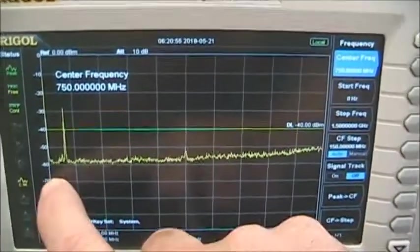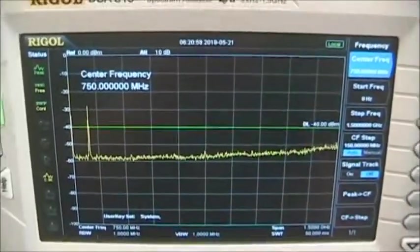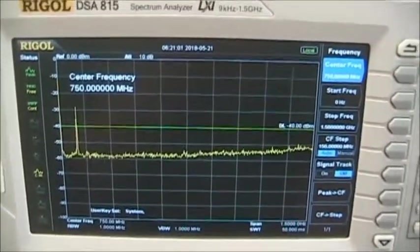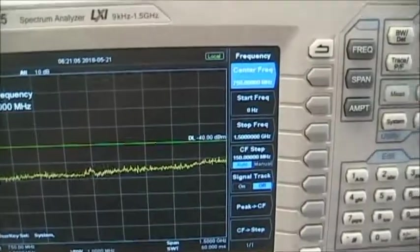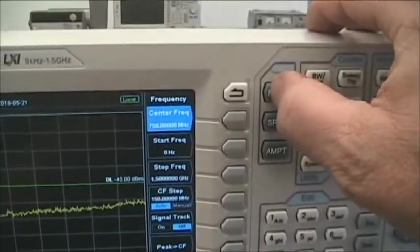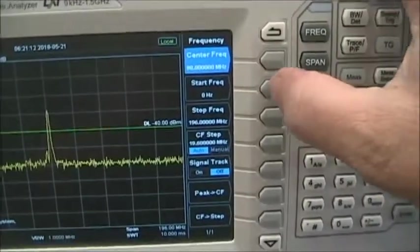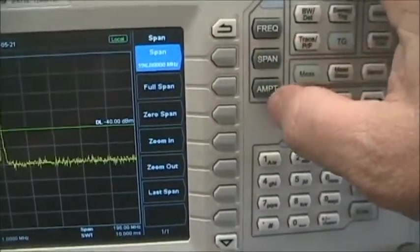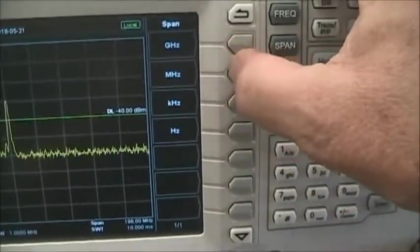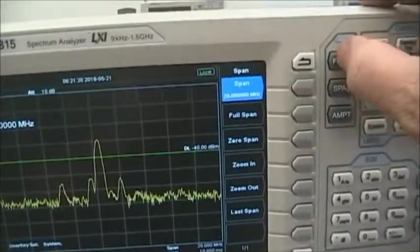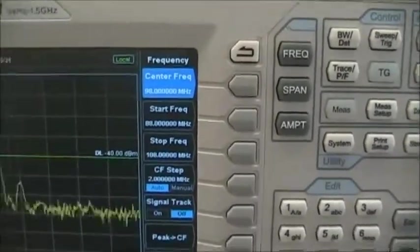Now we don't see much except in this band in here. And that turns out to be the FM band, which is 88 to 108 megahertz. So we're going to set the frequency for that band by hitting frequency 98 megahertz. And then span, we will set at 20 megahertz. Now you could also set the start and stop frequencies at 88 megahertz and 108 megahertz, the same thing.